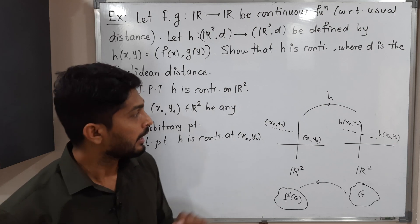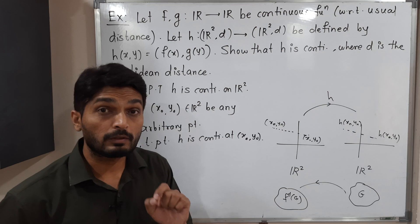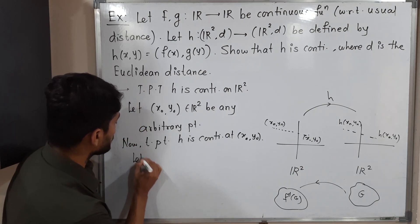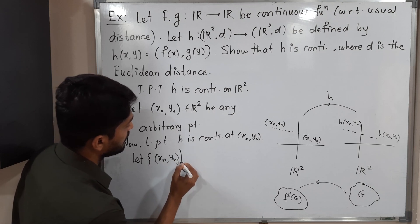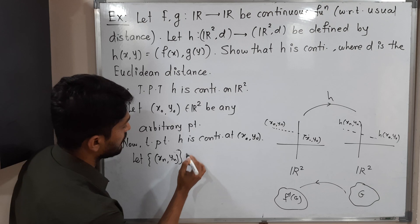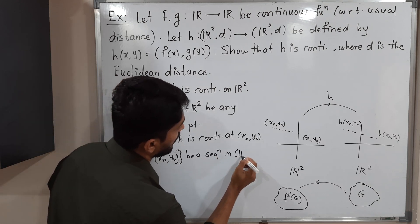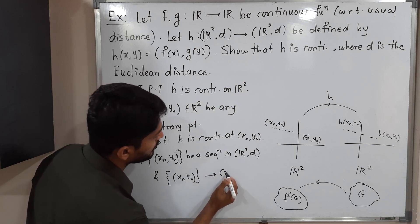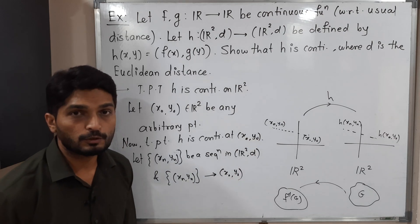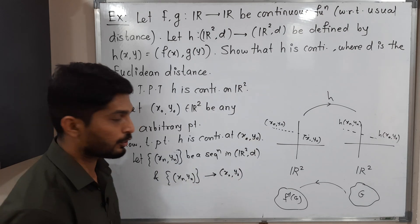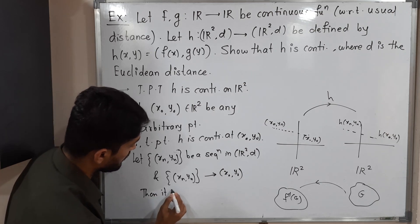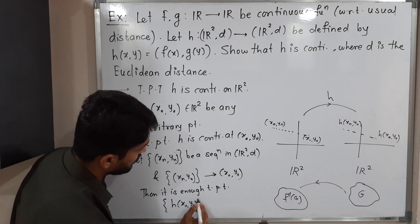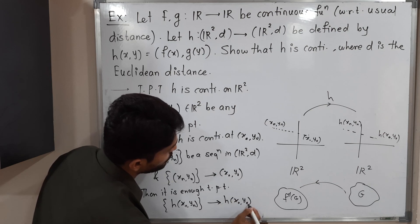Using the sequential definition: we take any sequence (xn, yn) that converges to (x₀, y₀), and our target is to prove H(xn, yn) converges to H(x₀, y₀). Let (xn, yn) be a sequence in (ℝ², d) where d is the Euclidean distance, and suppose (xn, yn) converges to (x₀, y₀). By definition of continuity, it is enough to prove that H(xn, yn) converges to H(x₀, y₀).